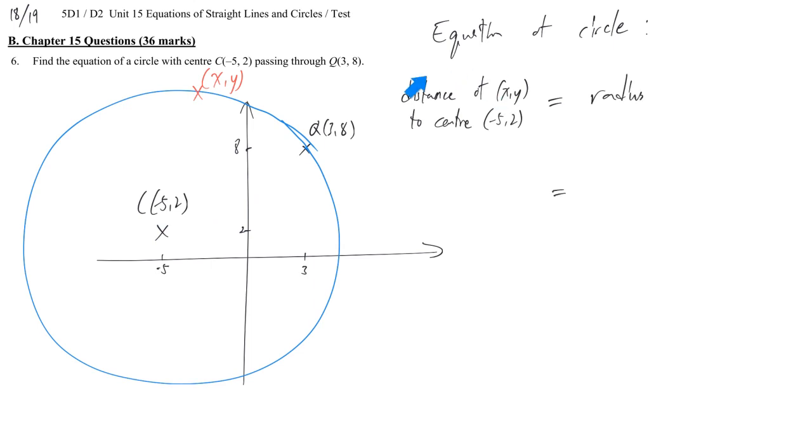On the left-hand side here, the distance, we can use the distance formula to express it. So that's why it is square root: delta x squared plus delta y squared. The x difference is x minus negative 5, so that means (x + 5) squared. The y difference is y minus 2, so (y - 2) squared.